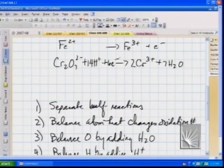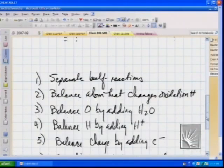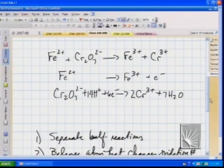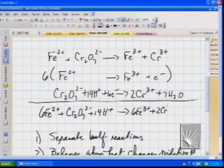Balance the charge by adding electrons. This is where it gets complicated. On the right-hand side there is a plus six charge. On the left-hand side you've got a minus two charge from the dichromate and a 14 plus charge from the hydrogens, so you've got a net charge of plus 12. So we have plus 12 on the left, plus six on the right. We need six electrons.